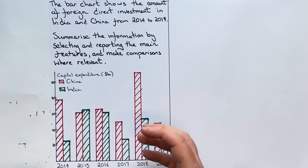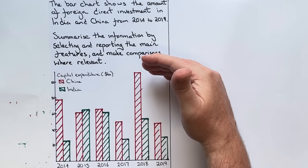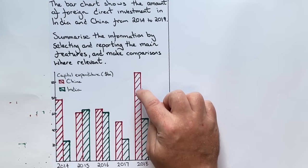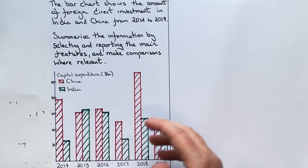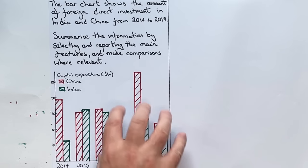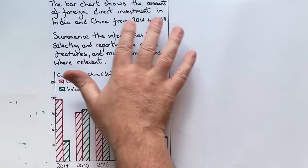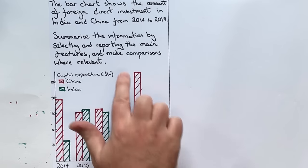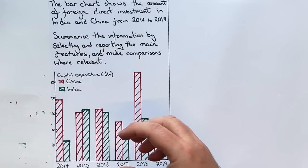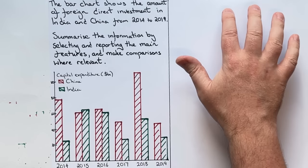We're also going to look at the biggest and the smallest values. China has a massive amount of investment in 2018, so we're probably going to mention that. And if we look overall, it's easy to see that throughout this period China has more foreign direct investment than India — and that's where the comparisons come in. Those are the main things we're going to write about.